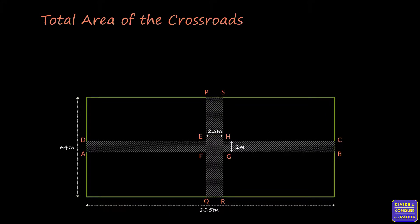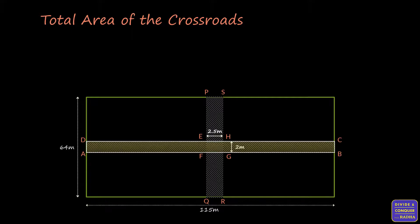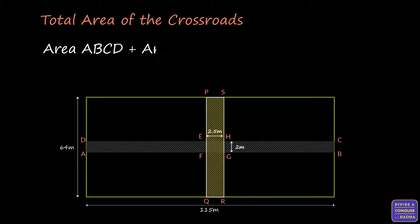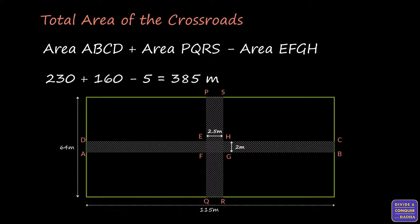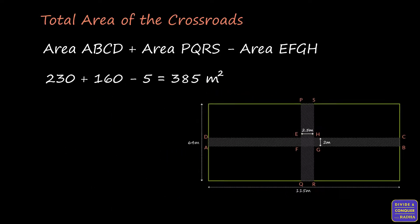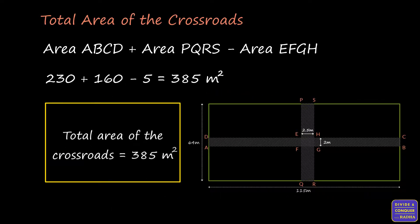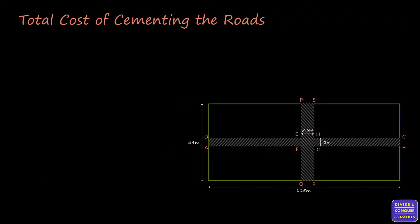The total area is calculated by adding the area of crossroad 1 and crossroad 2, then subtracting the common area. Area of ABCD is 230 m², area of PQRS is 160 m², and common area EFGH is 5 m². So the total area of the crossroads equals 230 plus 160 minus 5, which gives us 385 square meters.